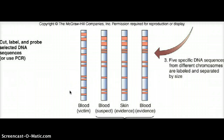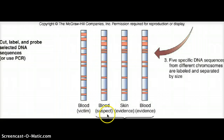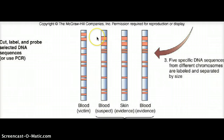The one on the left-hand side is DNA obtained from the blood of the victim — this is the banding pattern we get. Then we have blood obtained from the suspect, and the DNA fragments from that show a different banding pattern.